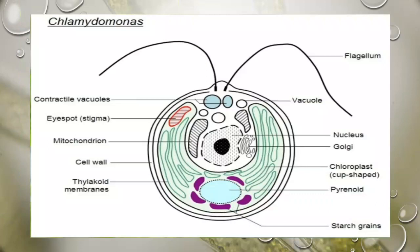A common example is Chlamydomonas. Contractile vacuoles are present. The structure includes an eyespot, mitochondria, cell wall, thylakoid membranes, starch grains, pyrenoids, chloroplast, Golgi apparatus, nucleus, vacuoles, and flagella.